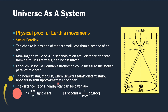Knowing the value of the parallax angle phi in seconds of arc, the distance of a star from earth in light years can be estimated. Friedrich Bessel, a German astronomer, was first to measure stellar parallax. The distance r of a nearby star is given as r = 3.26/φ light years, where one second equals 1/3600 degrees. This way we can find the distance of earth from any nearby star by knowing the value of phi.